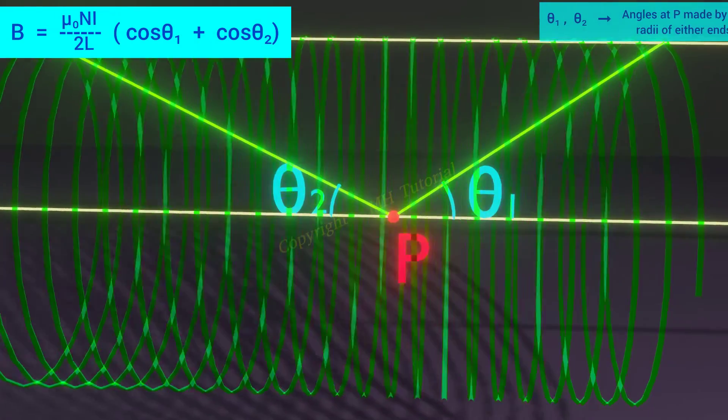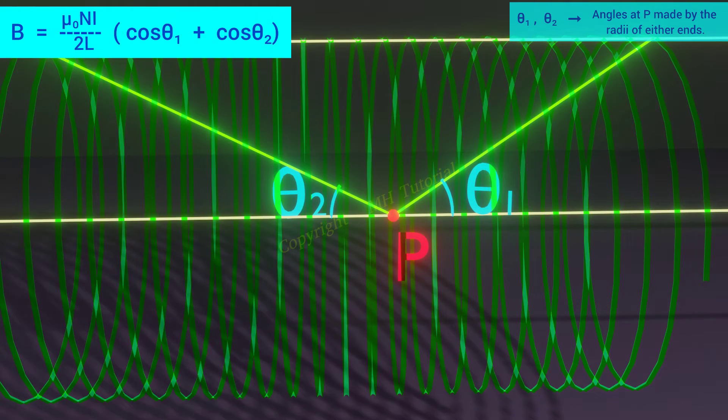Where, theta1 and theta2 are the angles shown in this scene. Radius at the end of the solenoid made this angle at P.